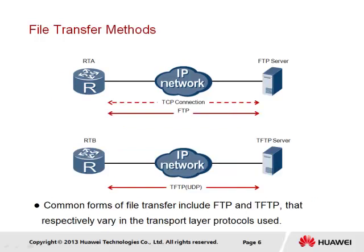File transfer may be performed using a number of means; however, the common methods employed include FTP and TFTP. FTP relies on the establishment of a TCP-based connection to maintain communication and ensure all files transferred between source and destination are delivered without loss. TFTP employs the UDP protocol, which minimizes overhead to allow more data to be carried in each packet. Since UDP does not support acknowledgements, TFTP supports messages within the application itself to manage the connection and send acknowledgements of data transfer rather than relying on TCP.